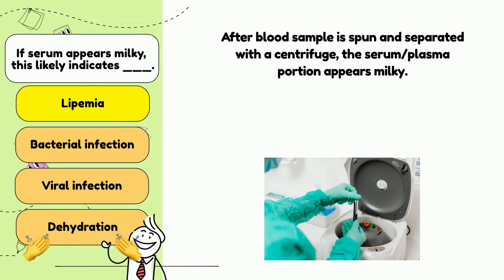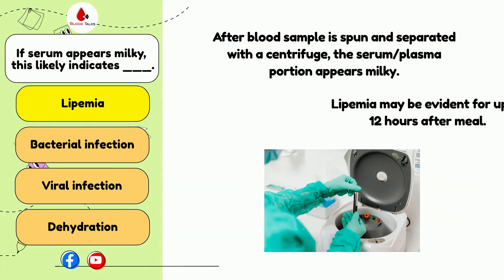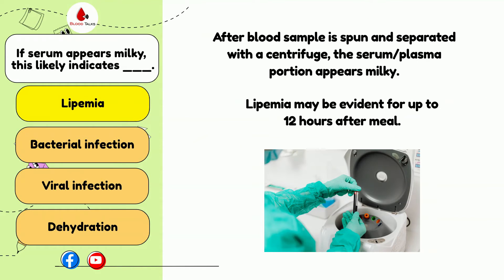How can we tell if something is lipemic? After blood is spun and separated in a centrifuge, the serum or plasma portion is milky in appearance. This likely indicates lipemia, which is an increase in lipids or fat from ingestion of food. If the serum or plasma is lipemic, it may interfere with some tests.